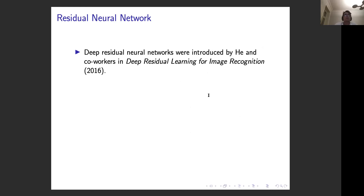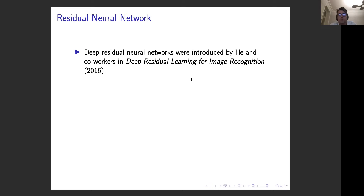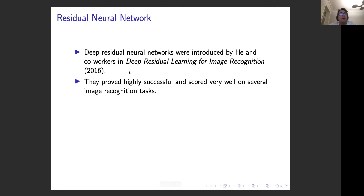I'm not talking about any deep neural network today — I'm talking specifically about residual neural networks. They haven't been around for very long; they were defined by He and co-workers, who were at Microsoft Labs at the time, around 2015–2016. The paper was published in 2016, but in 2015 they showed the world really impressive results in image recognition using deep residual networks, and they quickly became popular.